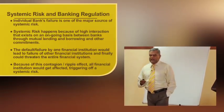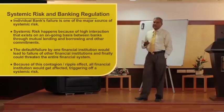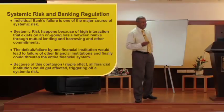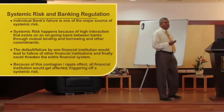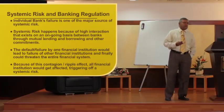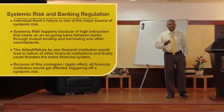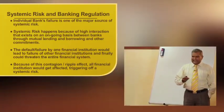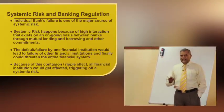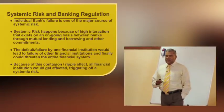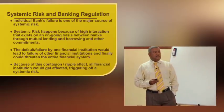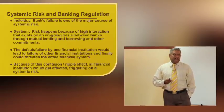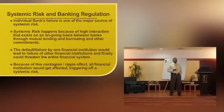This is called interconnectedness. The Basel 3 regulations have come only to solve this interconnectedness. This interconnectedness could threaten the entire financial system. Because of this contagion — interconnectedness is also called contagion or ripple effect — all financial institutions would get affected, triggering systemic risk.